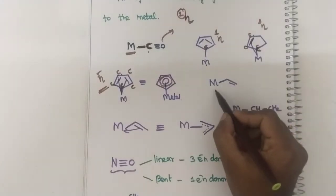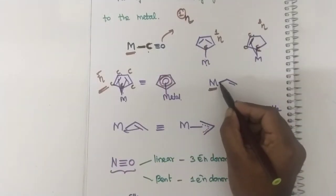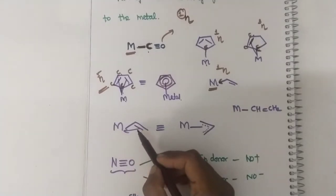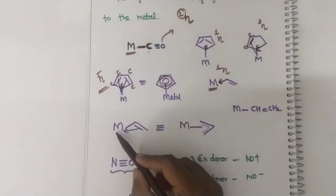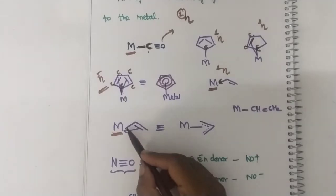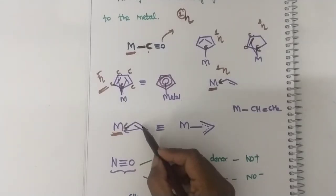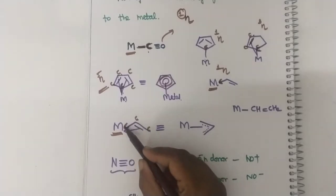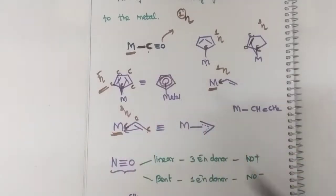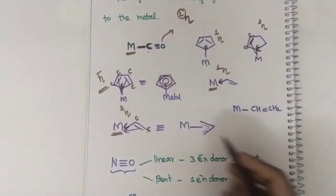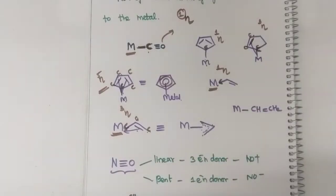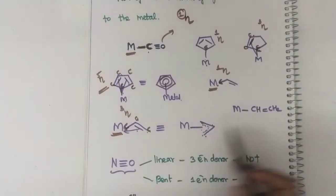Now in this case the metal is attached to only one carbon, hence eta will be one. But if it is attached like this — in this case the metal is attached to this carbon and to this pi bond, which contains two carbon atoms. Hence one, two, three — so eta power three. It can also be denoted with all these carbon atoms shown attached to the metal surface.